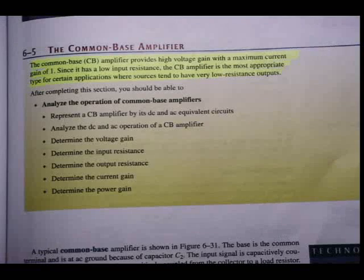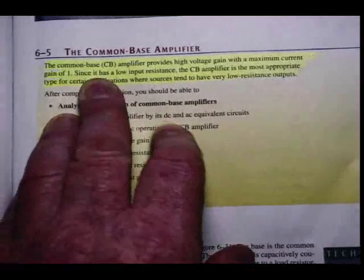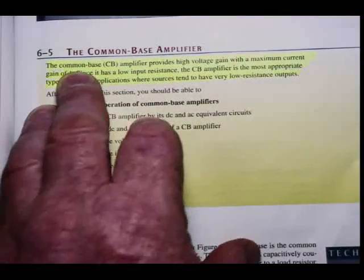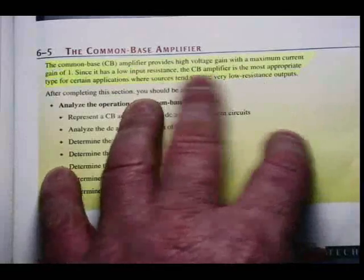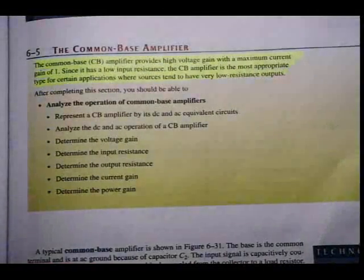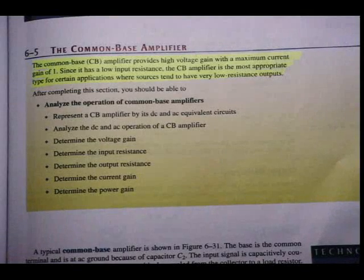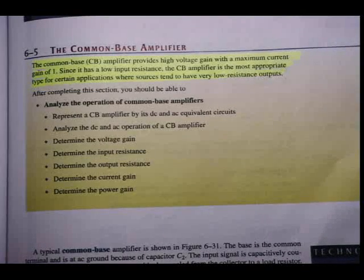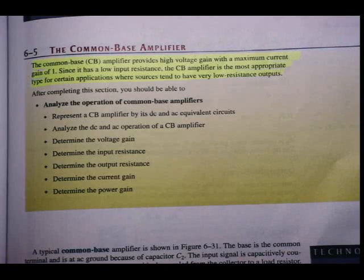As we always do, let's have a look at the introductory paragraph in the textbook as displayed on the board there. Underline or mark, the common base amplifier provides high voltage gain with a maximum current gain of 1. Since it has a low input resistance, the common base amplifier is most appropriate type for certain applications where the sources tend to have very low resistance outputs.